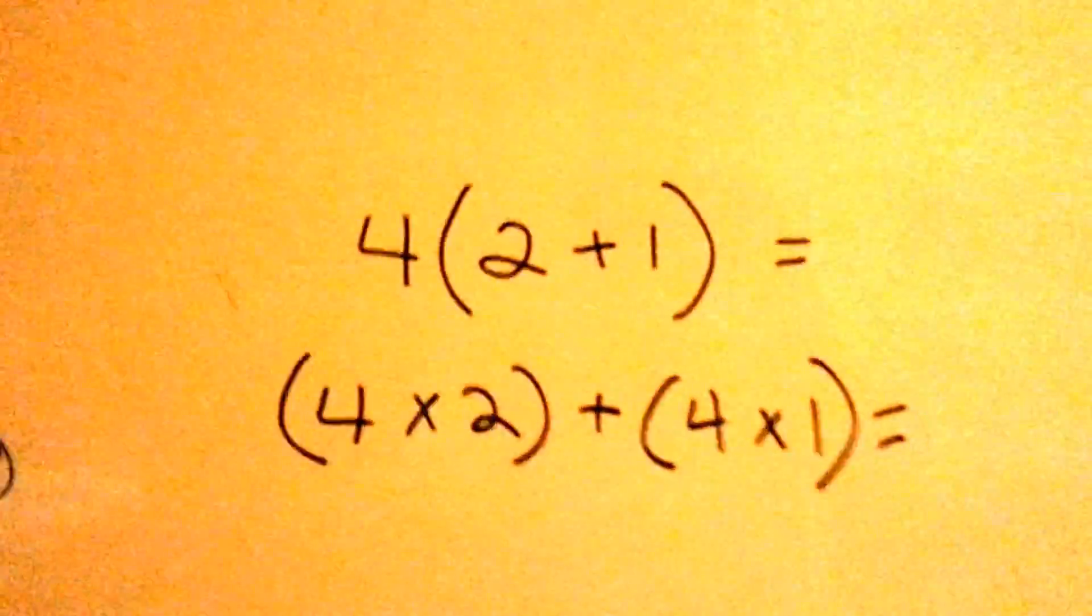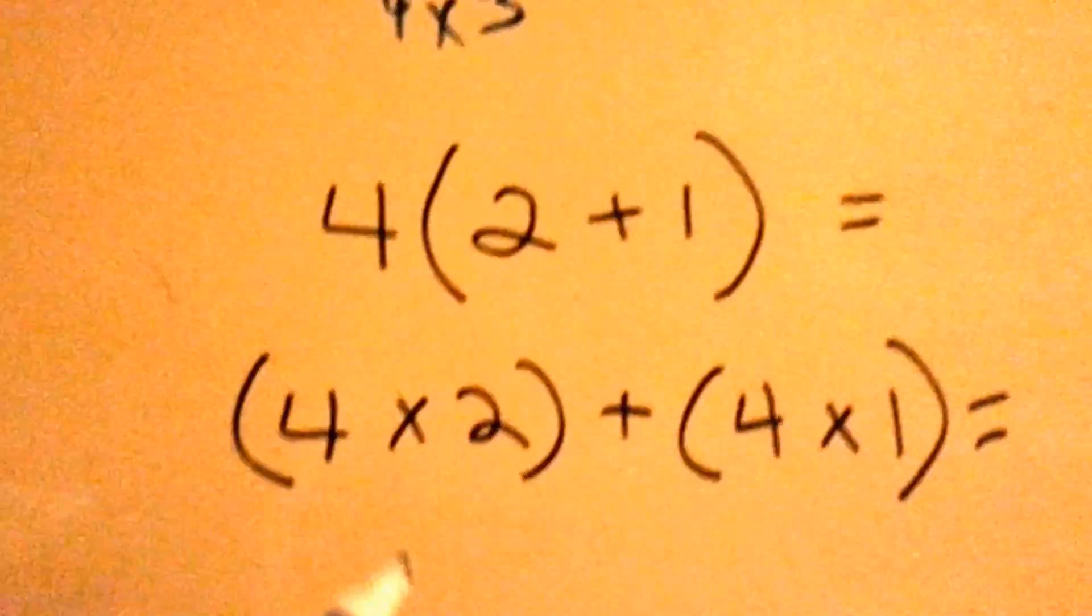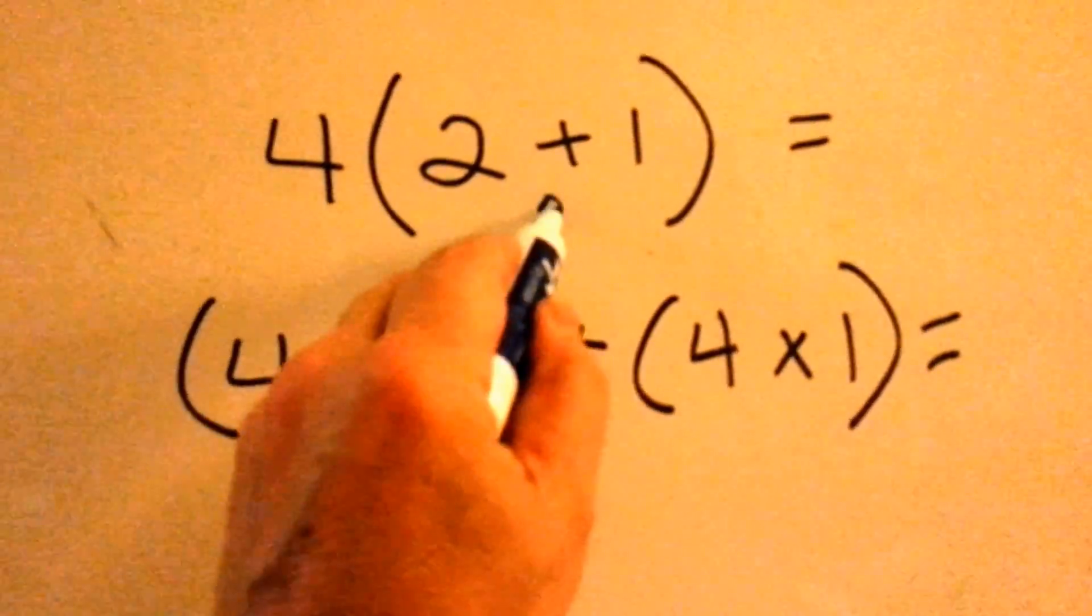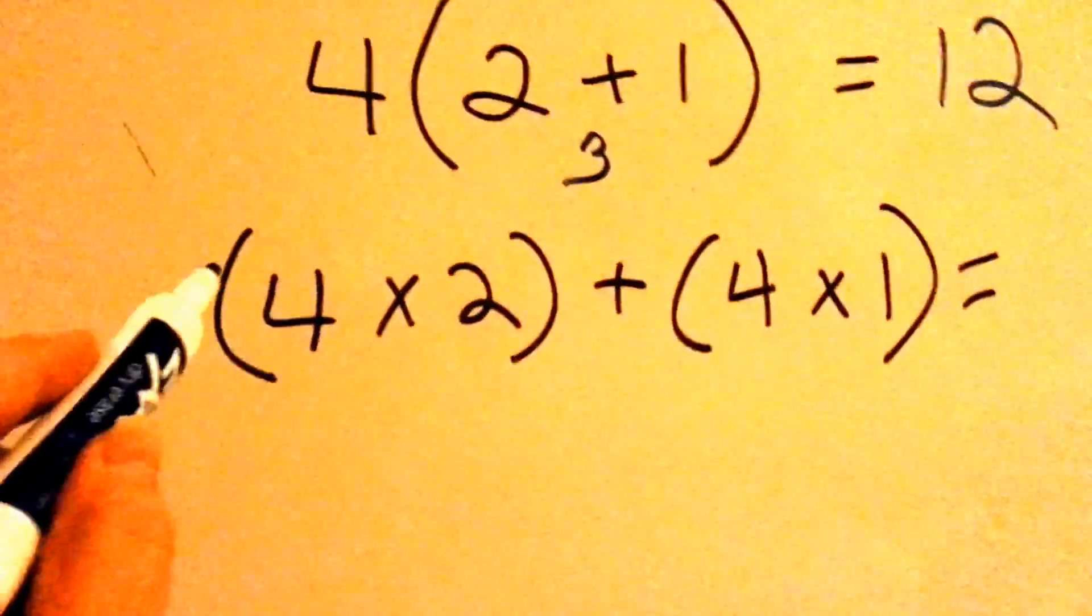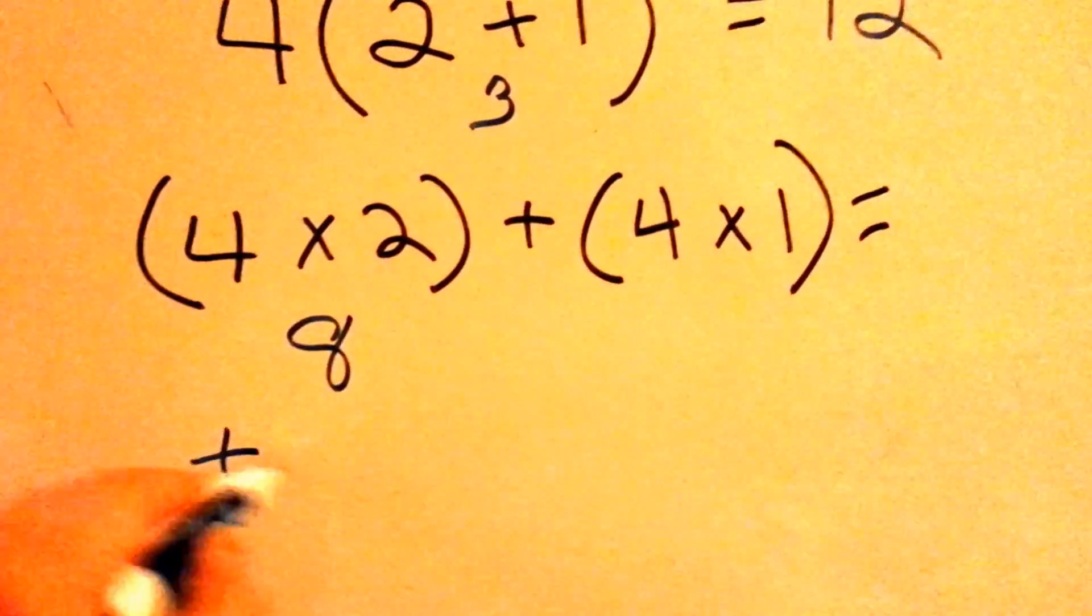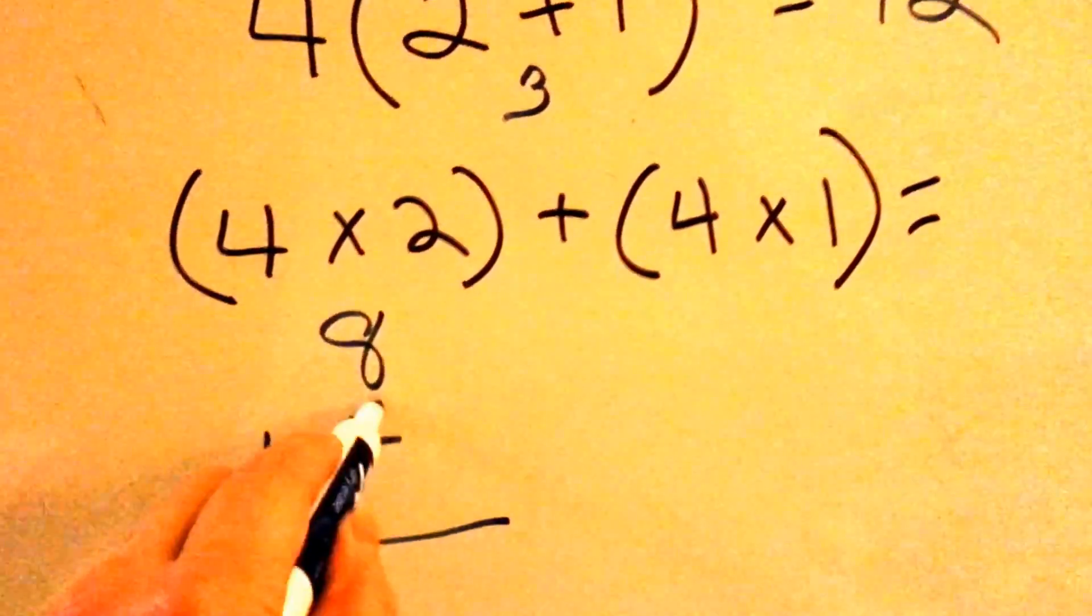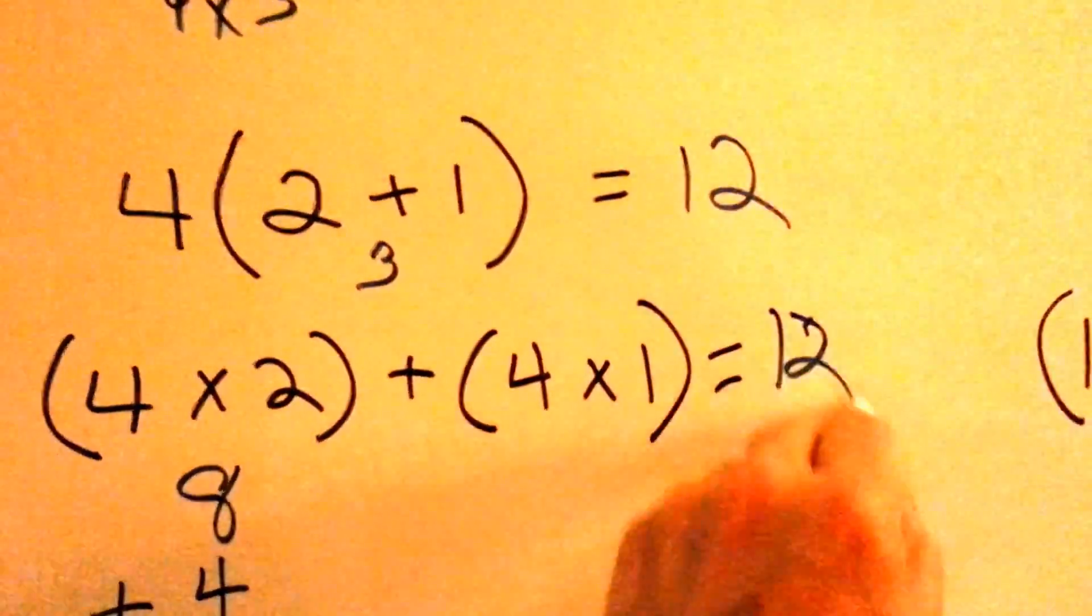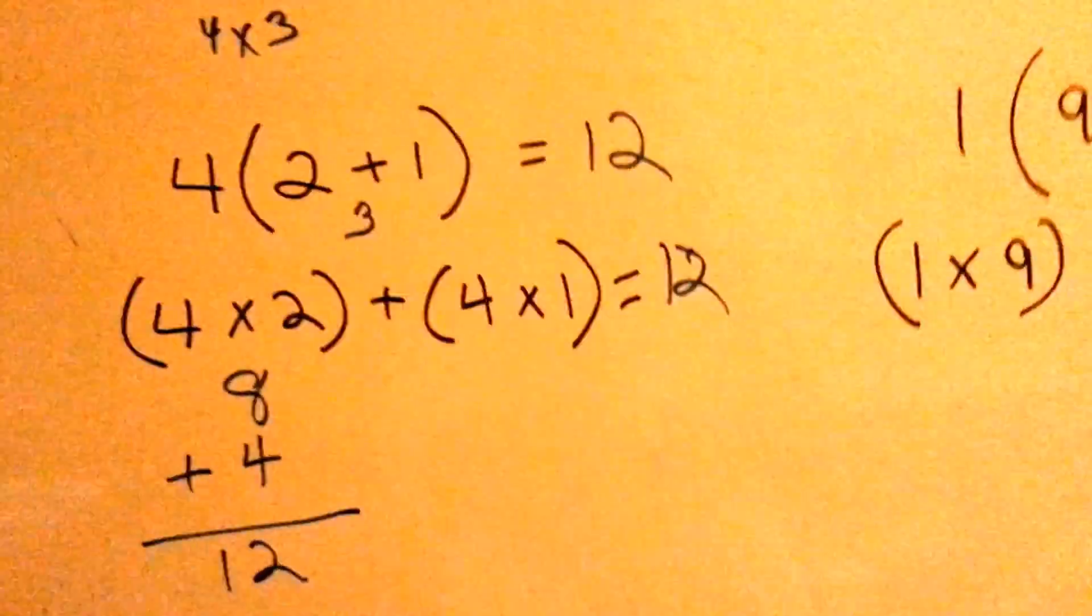Let's try it again. What if you have 4 times 3? Well, that's what this says. It says 4 times 3 because 2 plus 1 is 3. 4 times 3 is 12. Let's try it this way. 4 times 2, which is 8, plus 4 times 1. 4 times 1 is 4. 8 plus 4 is 12. See? Distributive property says, whether you do it this way or this way, it's still going to be the same answer.